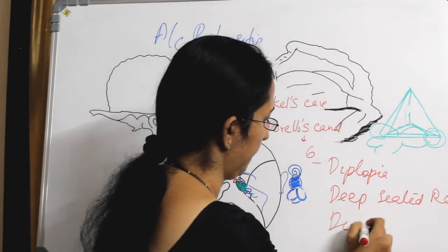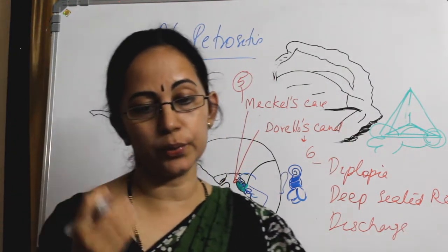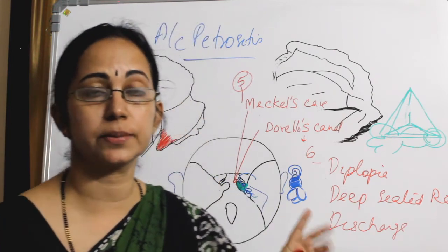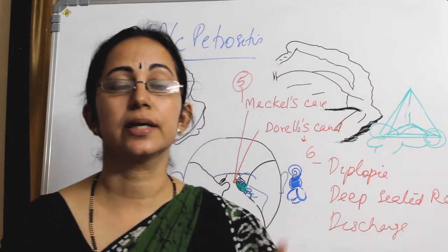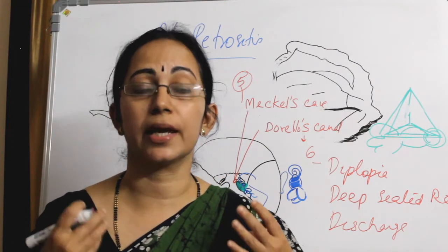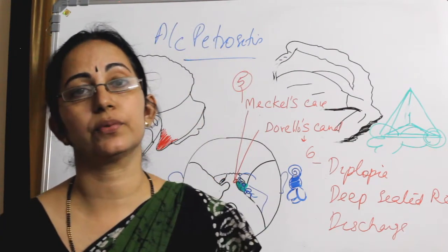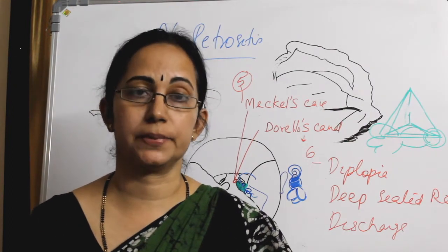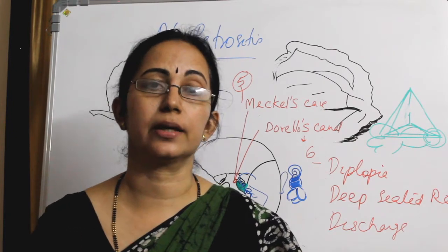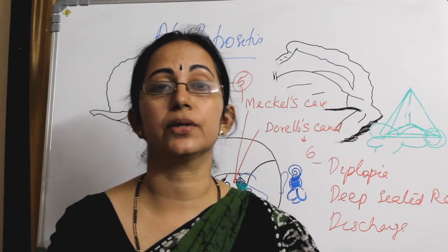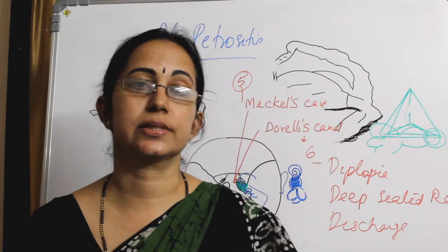That is the third feature — persistent discharge. Even if you do a cortical or modified radical mastoidectomy for suspected acute coalescent mastoiditis, if there is involvement of the petrous pyramid, the patient will again have ear discharge. In that case you have to suspect petrous apicitis and go for a high-resolution CT scan of the temporal bone.